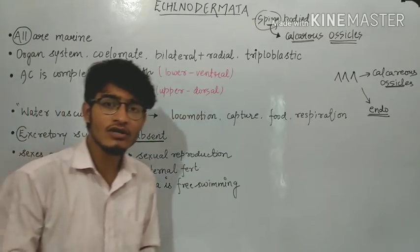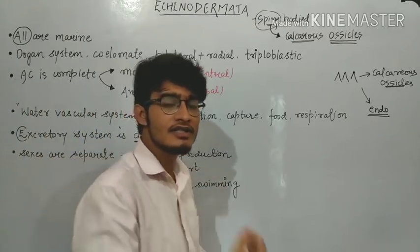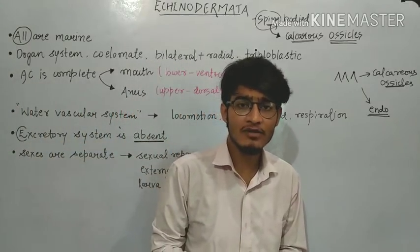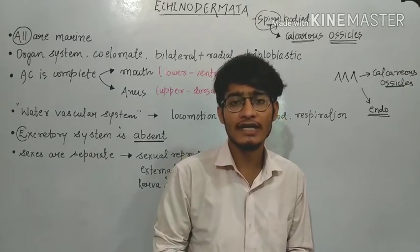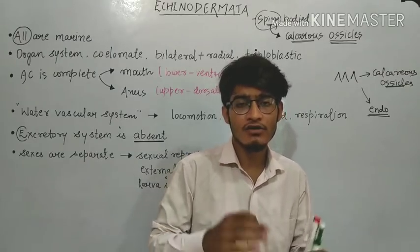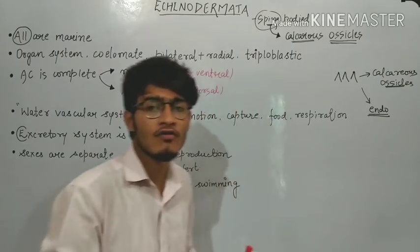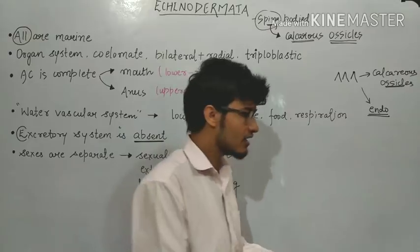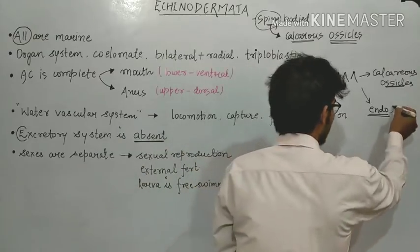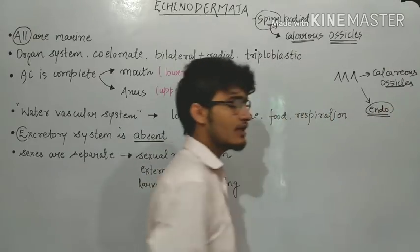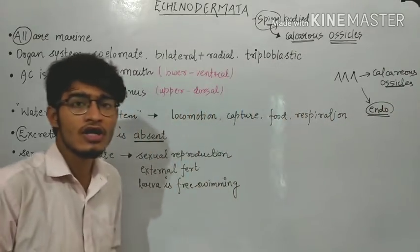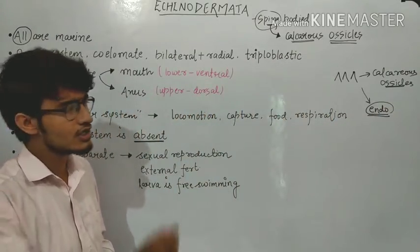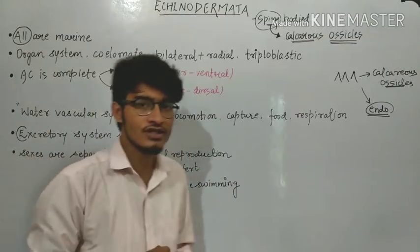In echinoderms, their name itself suggests that they are spiny-bodied. It means they contain spines which are formed from calcareous ossicles, and these form the endoskeleton of the body of an echinoderm. This is the first feature.